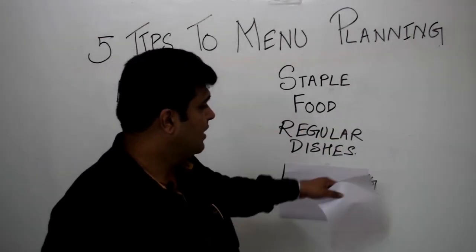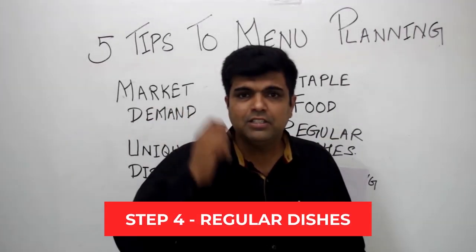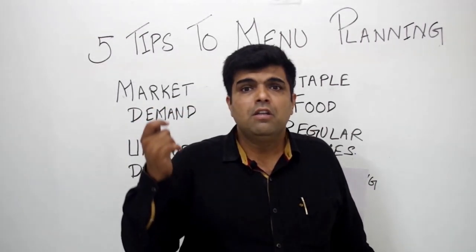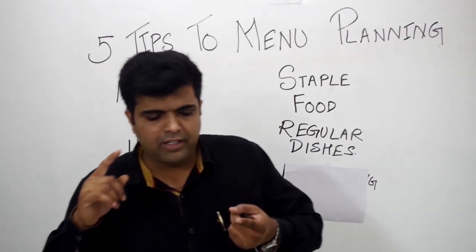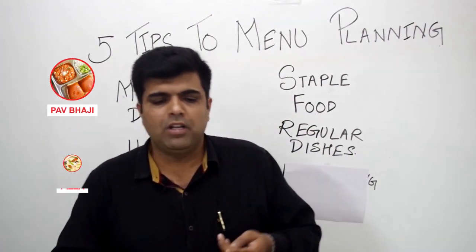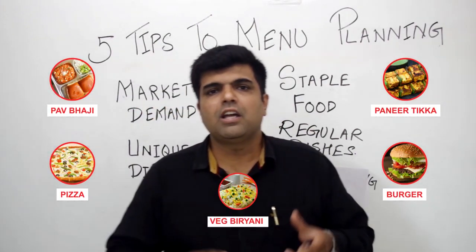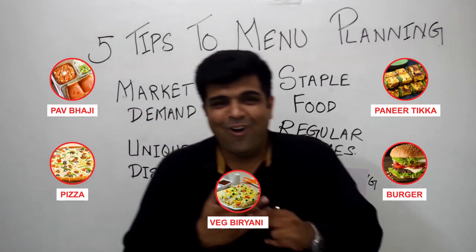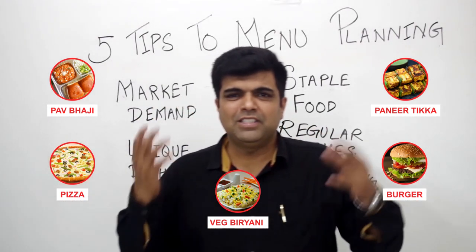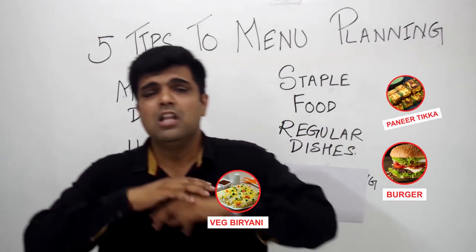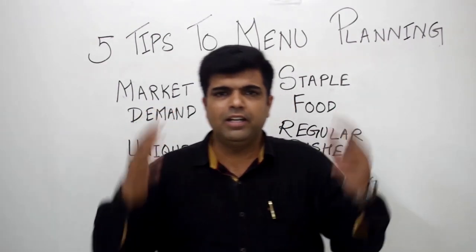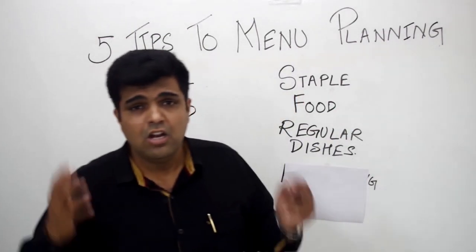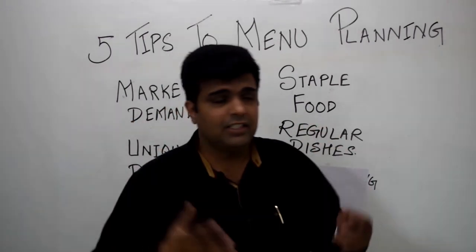The fourth is the regular dishes — whatever is selling the most. I will talk about Bombay here. The most products which are sold are pav bhaji, palate masala, veg biryani — and my mouth has started watering now. All these dishes: pizzas, pasta, burgers — you have to have these dishes in your menu, otherwise your menu will look totally alien to your existing customers.